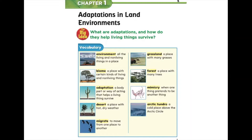Our first vocabulary word is environment — all the living and non-living things in a place. Our second vocabulary word is biome — a place with certain kinds of living and non-living things. Our third vocabulary word is adaptation — a body part or way of acting that helps a living thing survive. Our fourth vocabulary word is desert — a place with hot, dry weather. Our fifth vocabulary word is migrate — to move from one place to another.